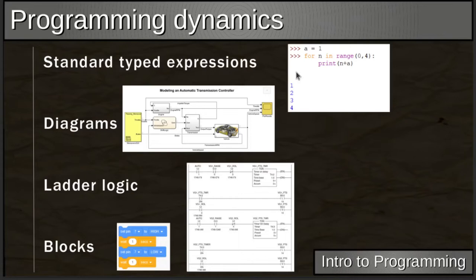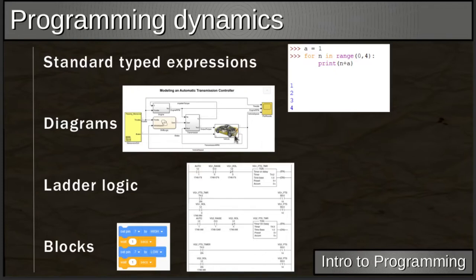There are different programming paradigms: standard typed code, where you write lines of code like you see in movies; diagrams, which show a flow process of variables and information; ladder logic, which goes rung by rung performing a series of operations; and blocks, which are similar to rungs but structured as a sequence — do this, then this, then this.